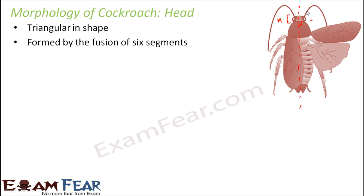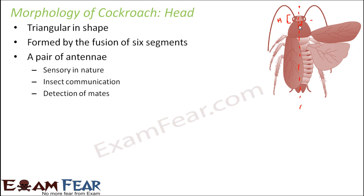The head shows great mobility due to the flexible neck. The neck is present where the head is joined to the thorax, and it is extremely flexible, allowing the cockroach to move the head in all directions. A pair of antennae is present on the head. They are sensory in nature, acting as sense organs. They are thread-like structures with sensory receptors that help in communication between insects.